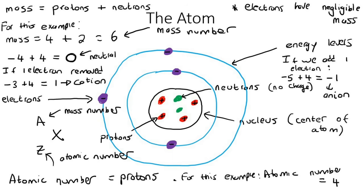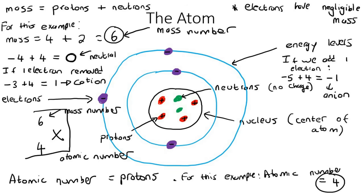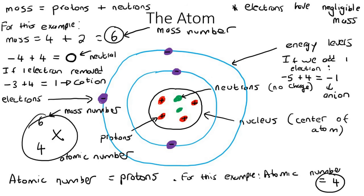Let me come back to the A, Z, X notation. For our example atom X, the mass number was 6 and the atomic number was 4. So you'd write 6 at the top and 4 at the bottom in the AZX format.